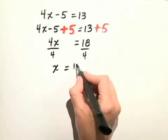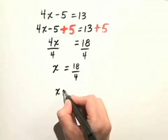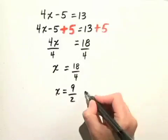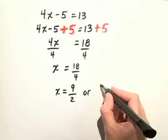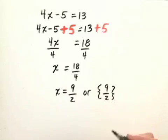If we divide both sides of 18 fourths by 2, we get a simplified answer that x is equal to 9 halves. Or, we can write the solution set as 9 halves.